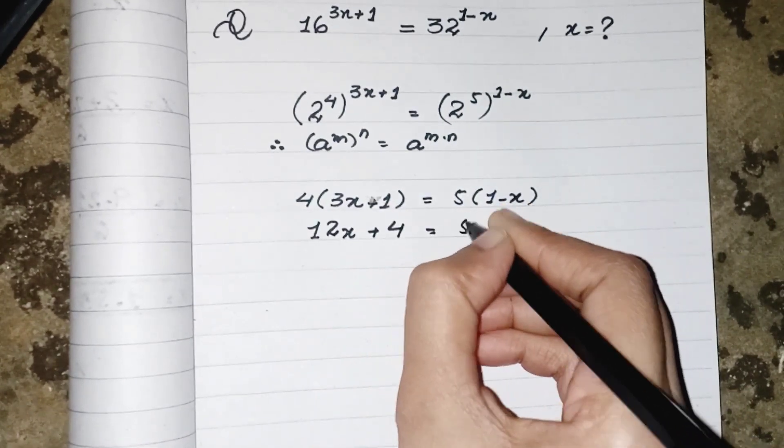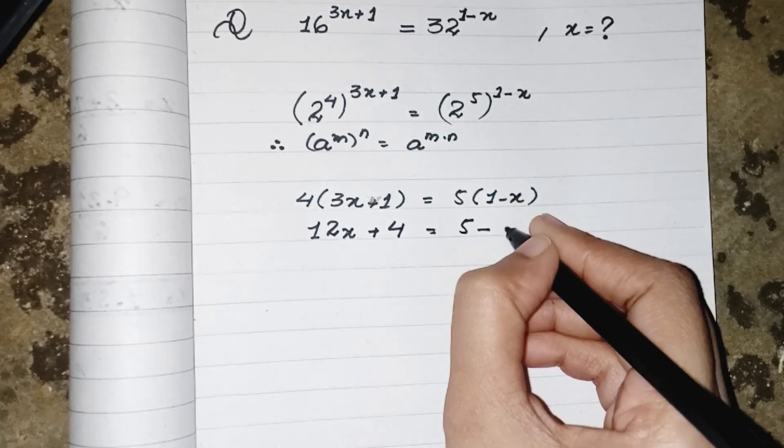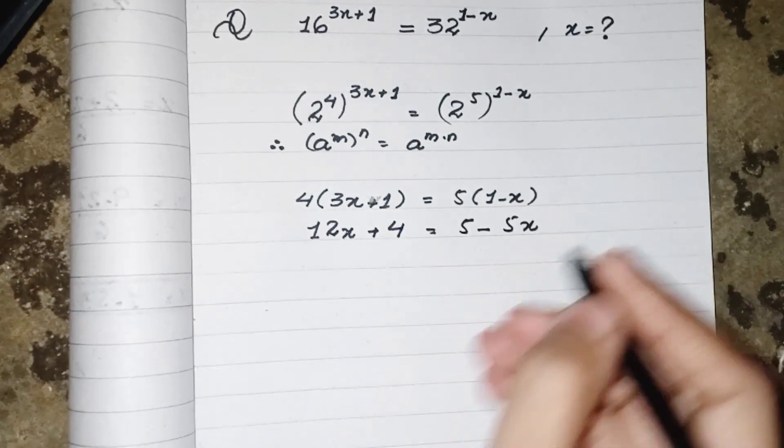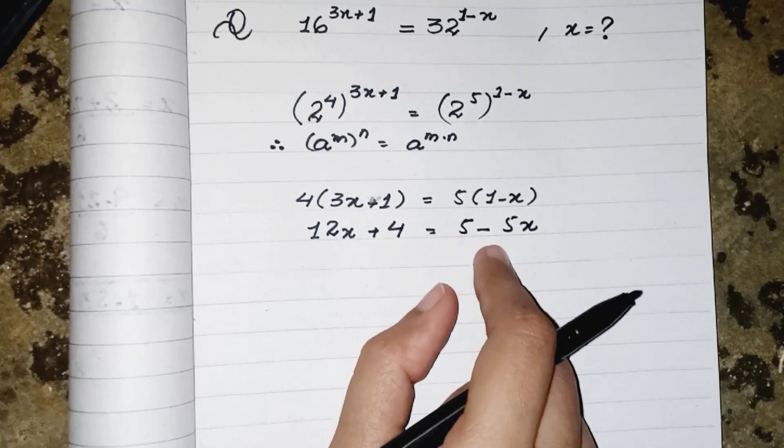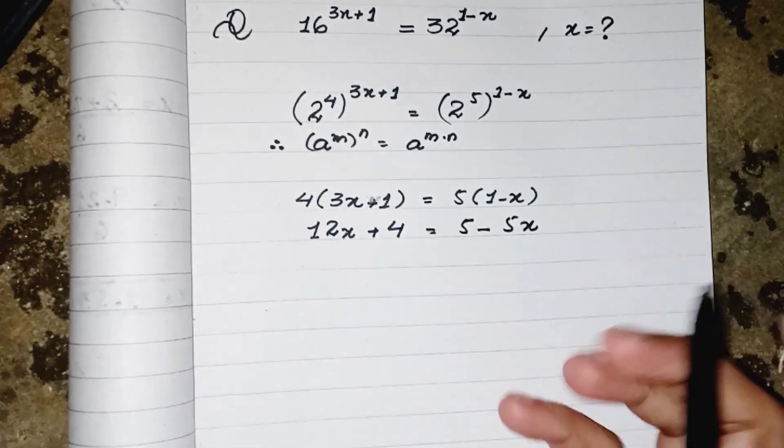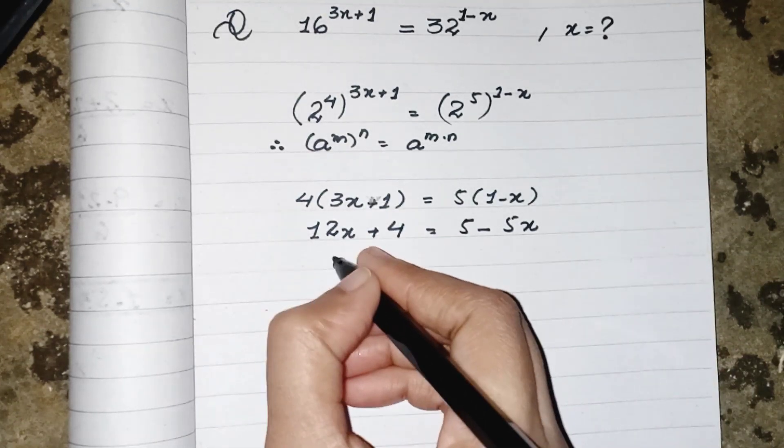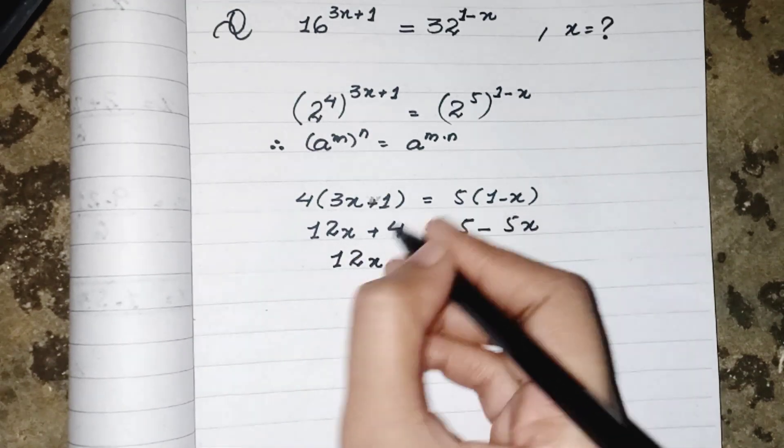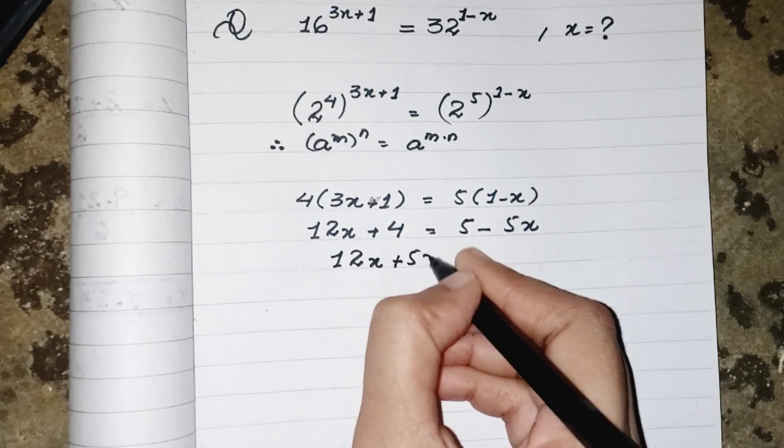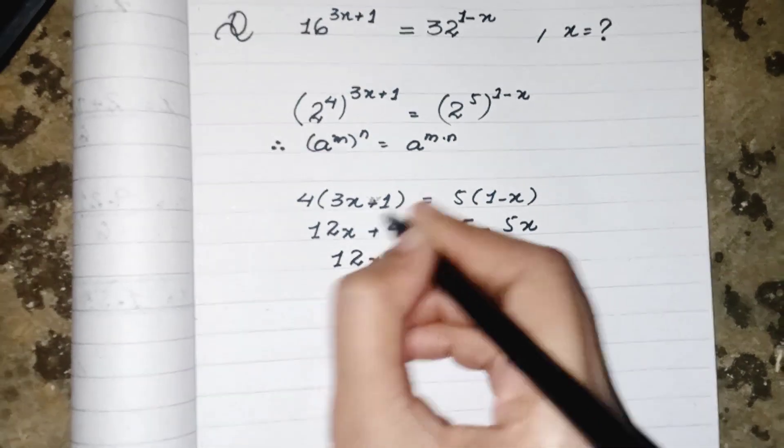5 multiply by 1 will result 5, 5 multiply by x will result 5x. Now we have to move the terms - the constant on one side and the term having variable on other side. So 12x plus 5x on one side.